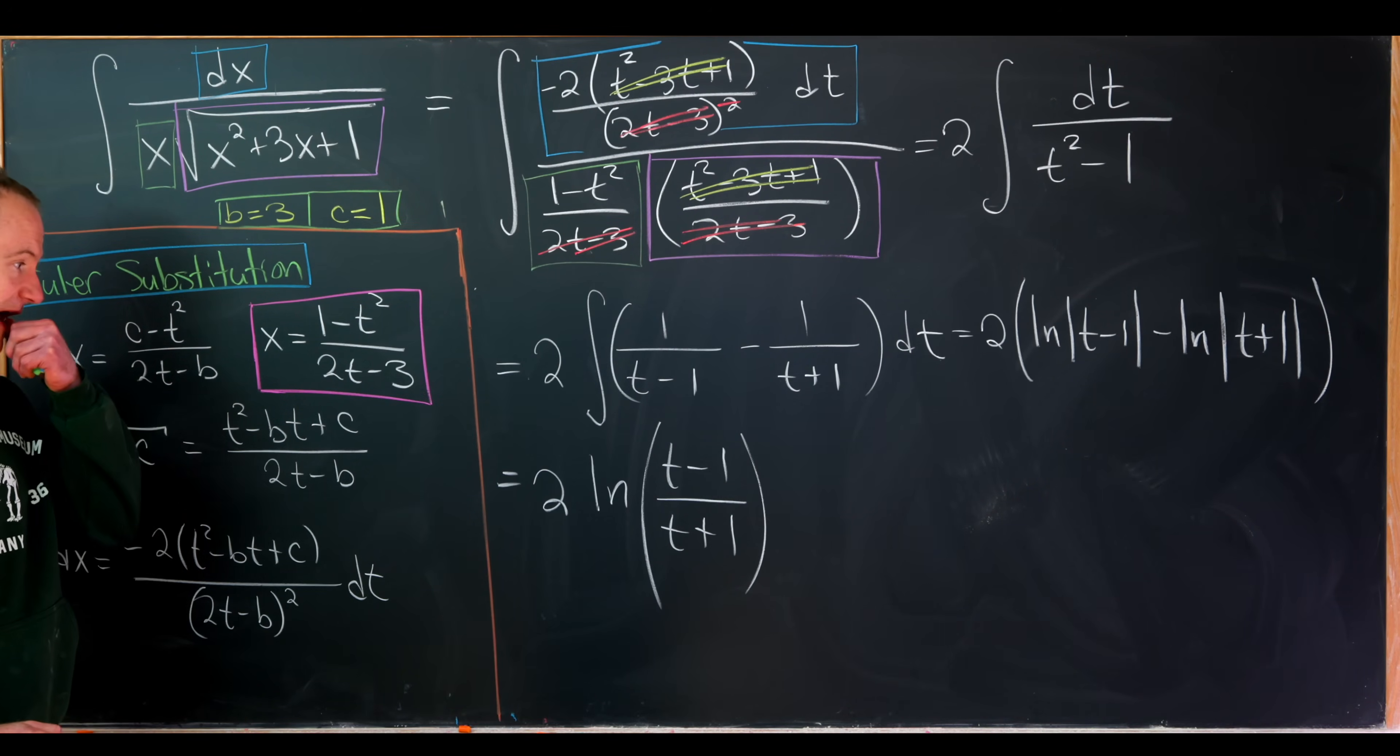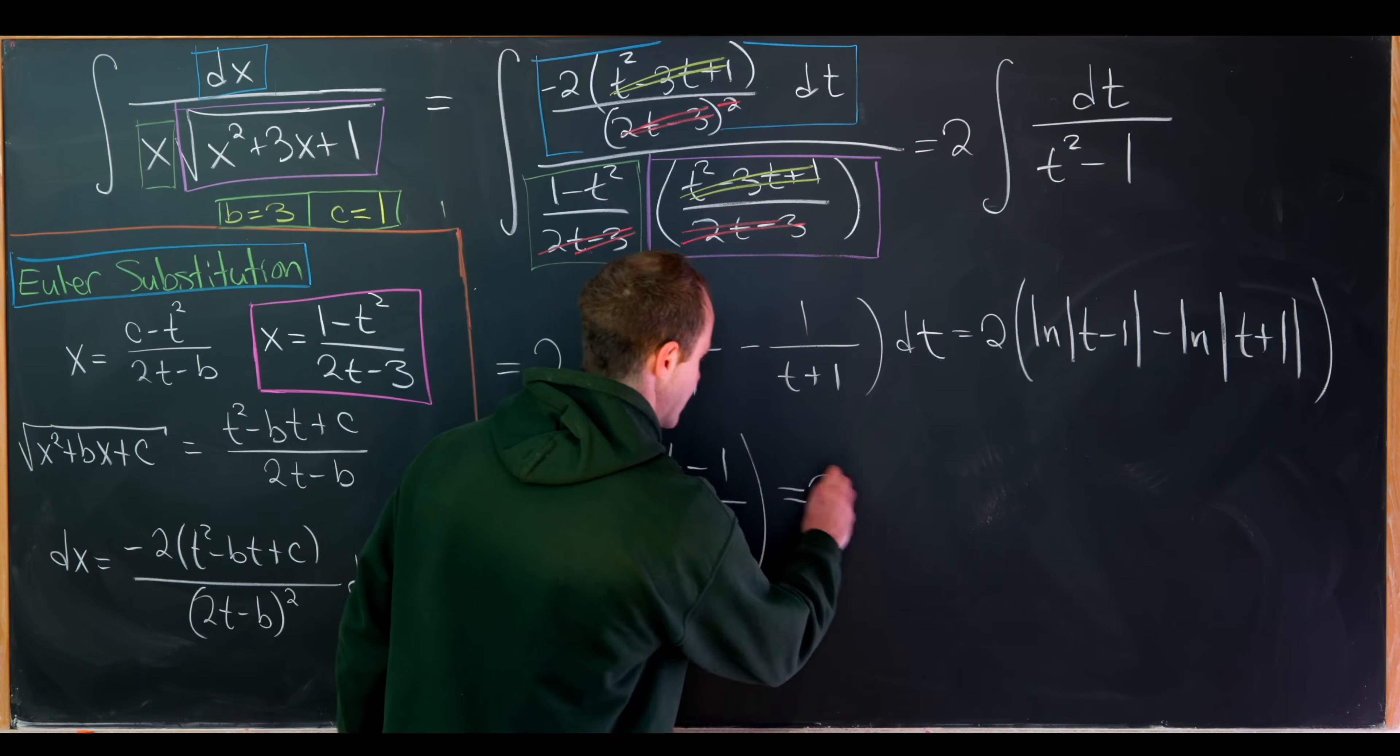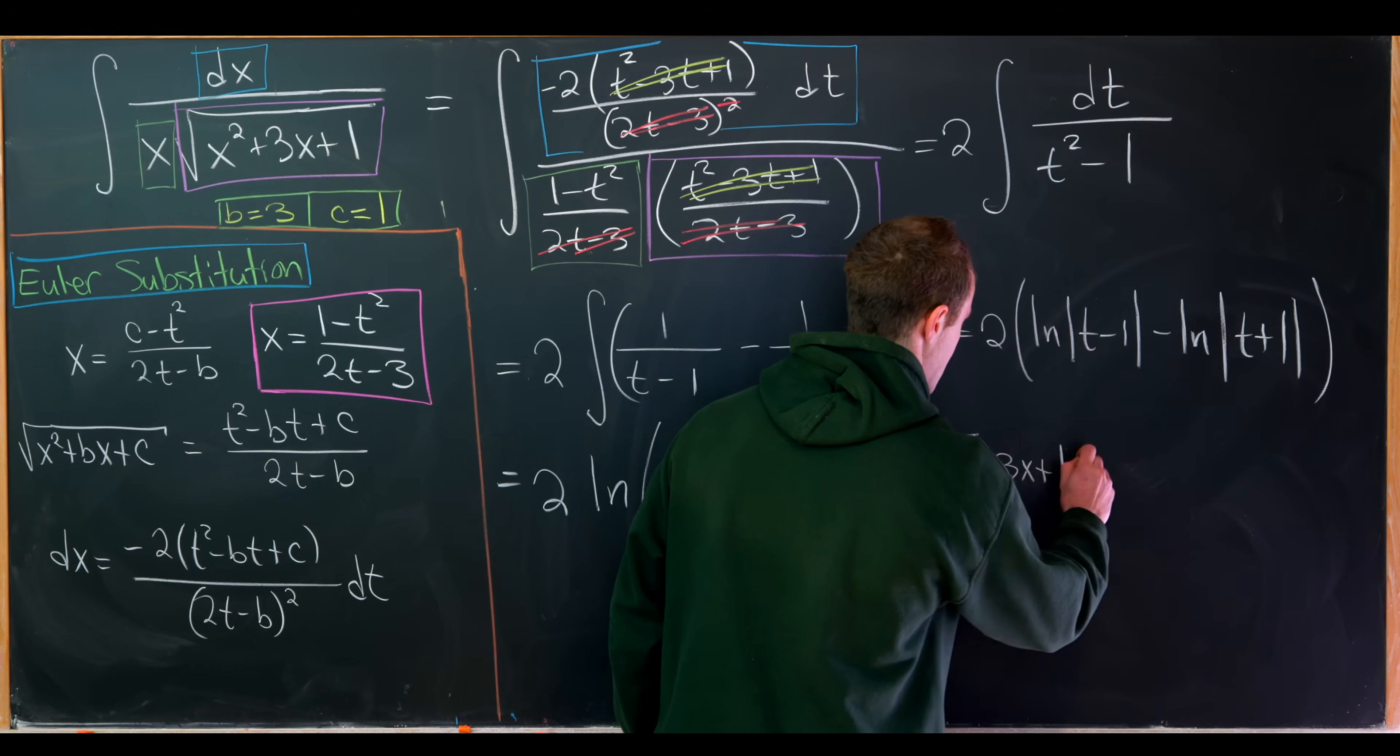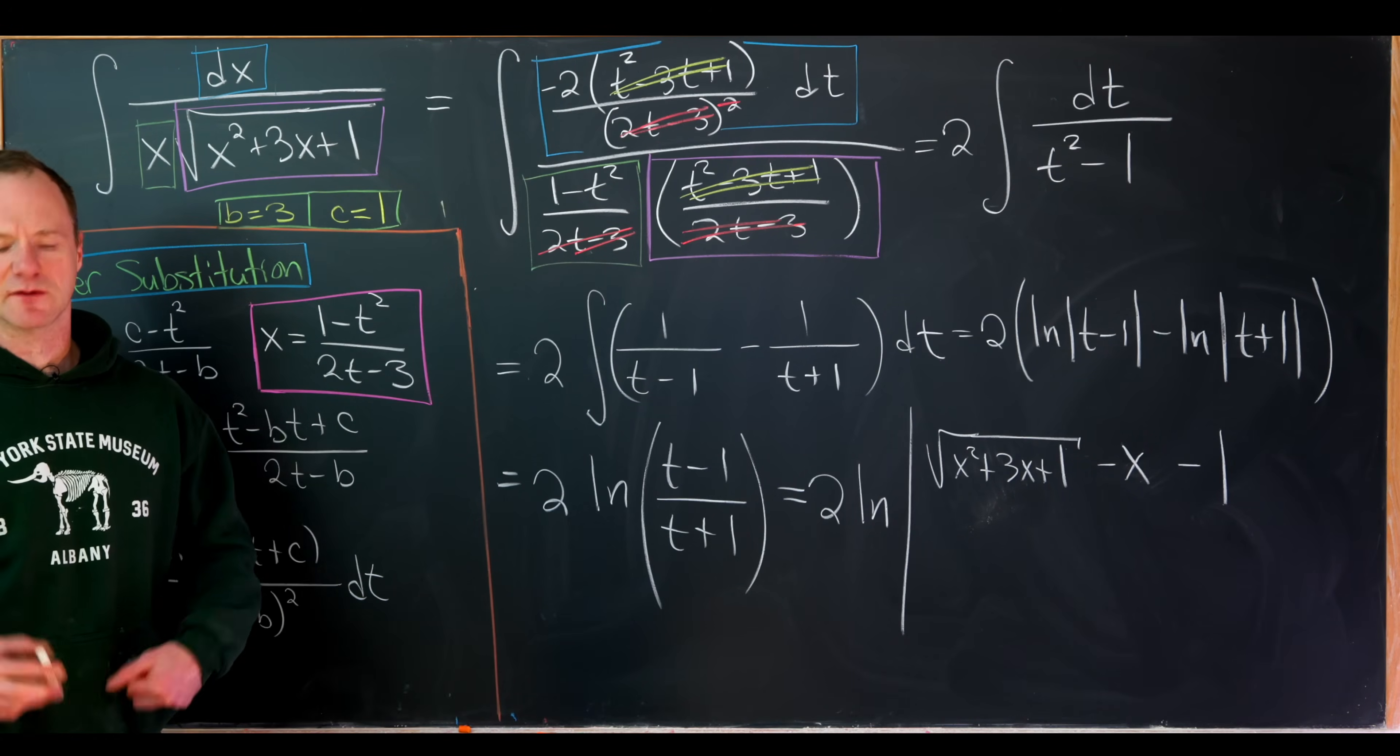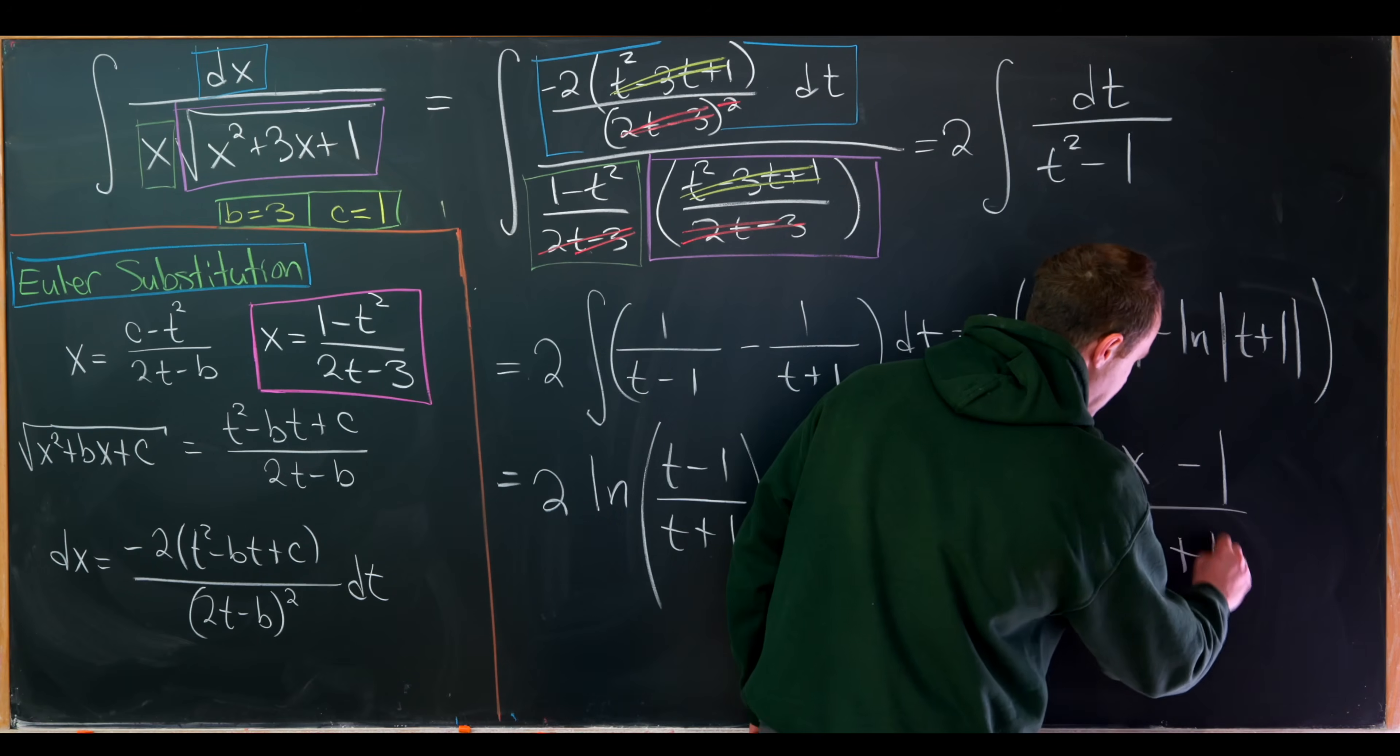But now we can substitute back in for t. And I didn't have room over here to rewrite what t was in terms of x. We had that at the start of our calculation on the last board. So I'll just maybe recall that now. That will give us 2 times the natural log of the absolute value of the square root of x squared plus 3x plus 1 minus x minus 1. So this square root of stuff minus x was what t was by our substitution. And then we'll have that same thing in the denominator but with a plus 1. So the square root of x squared plus 3x plus 1 minus x plus 1.